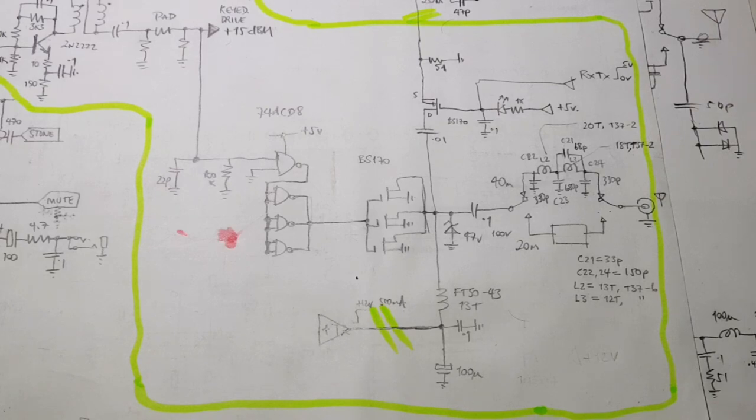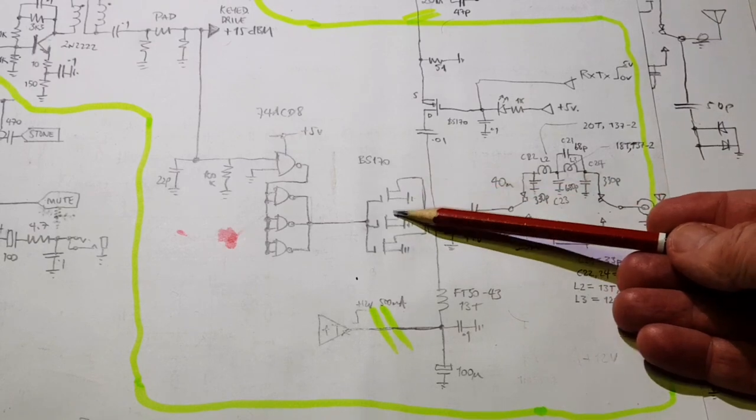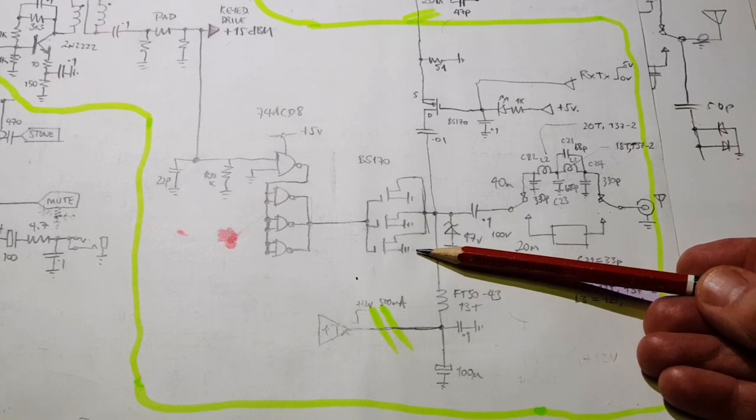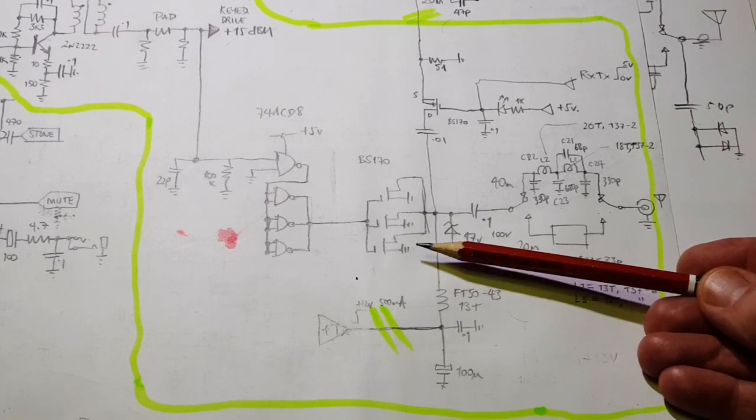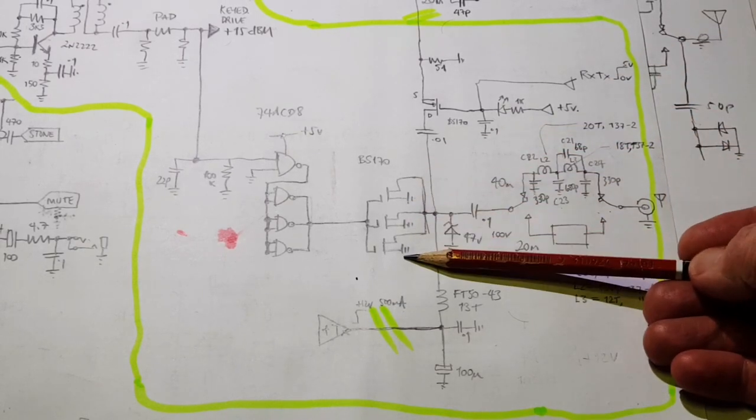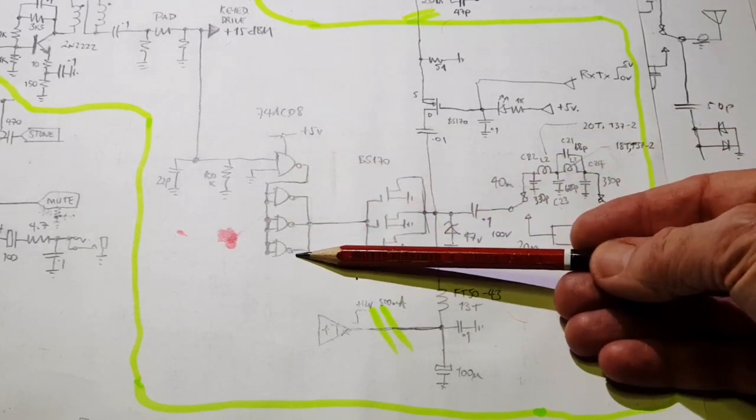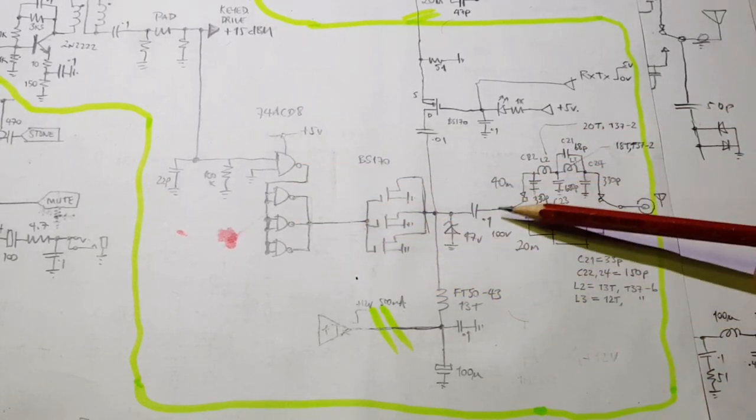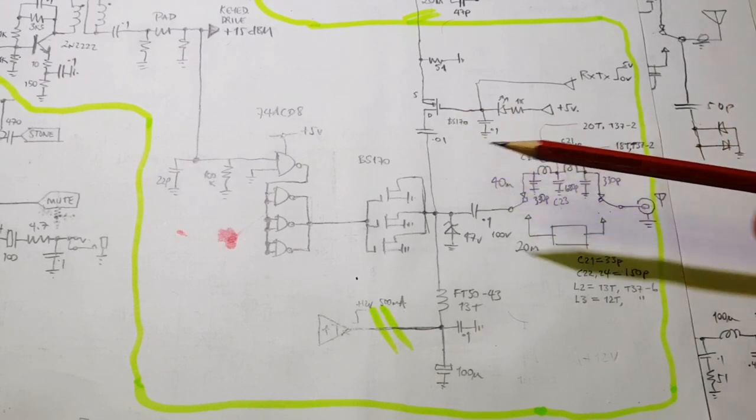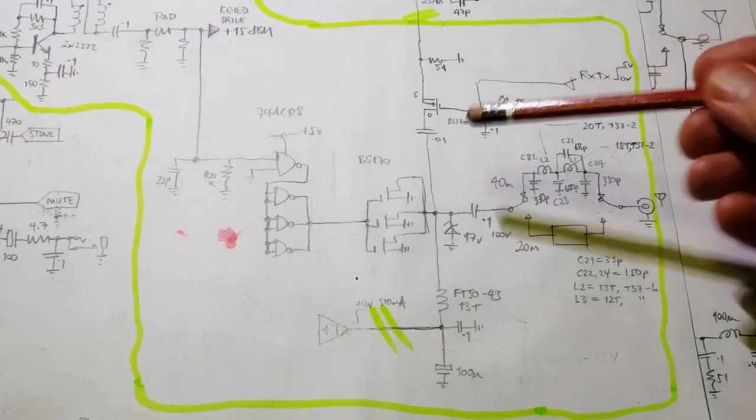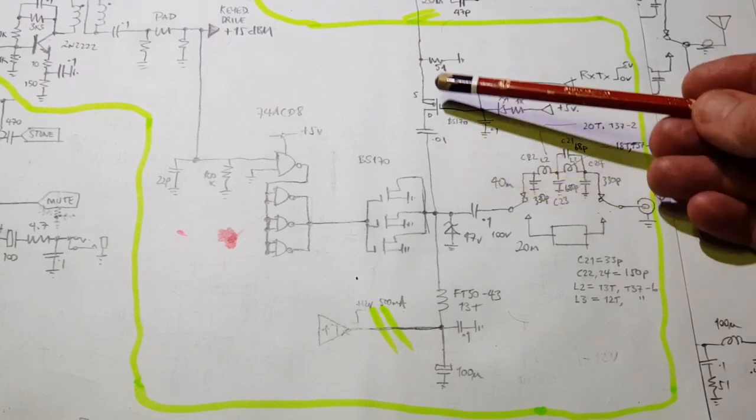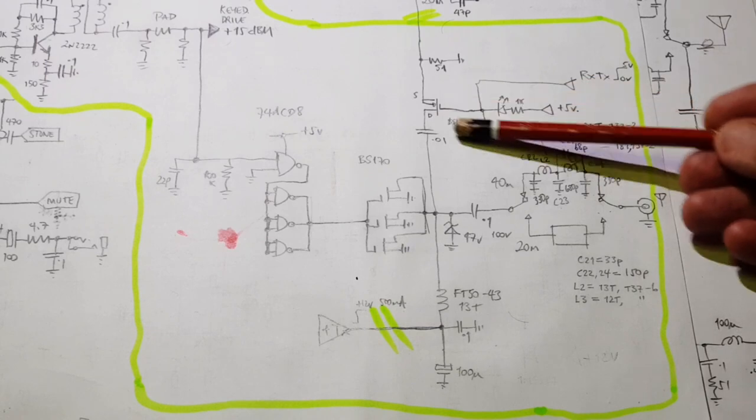But the more I look, the more I see people using this arrangement of three BS170s. This is used in a number of the KD1JV rigs and also in the QRP Labs QCX. The three parallel FETs are driven by a high-speed logic gate and then switched through low-pass filters.